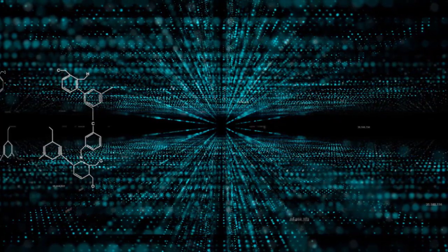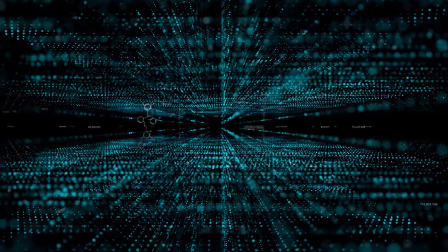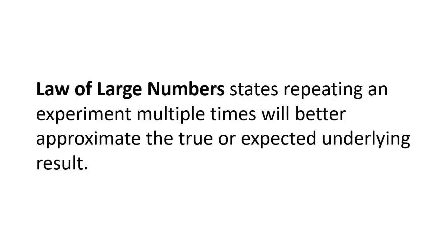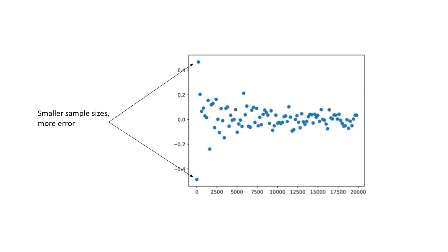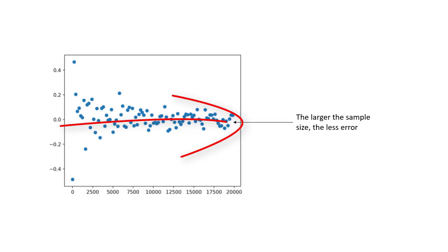If you've been around machine learning, you've heard: the more data, the better. There's a theorem in statistics and probability that supports this intuition — the law of large numbers. The law of large numbers suggests that the average result from repeating an experiment multiple times will better approximate the true or expected underlying results. Using statistical terms: as the size of samples increases, the mean value of the sample will better approximate the mean or expected value in the population. As the sample size goes to infinity, the sample mean will converge to the population mean.